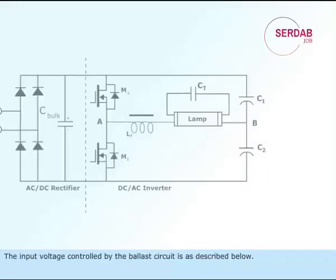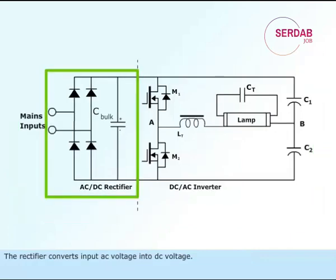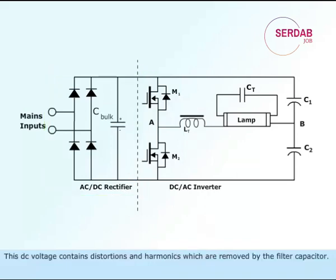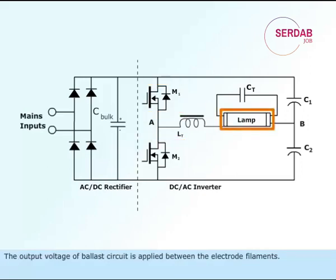The input voltage is controlled by the ballast circuit as described below. The rectifier converts input AC voltage into DC voltage. This DC voltage contains distortions and harmonics, which are removed by the filter capacitor. Switching transistors are used to convert DC voltage into AC voltage. The output voltage of the ballast circuit is applied between the electrode filaments.